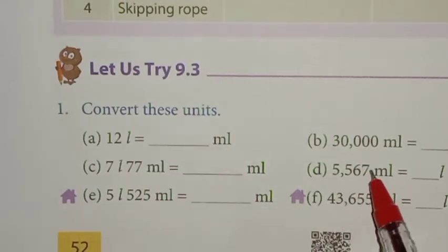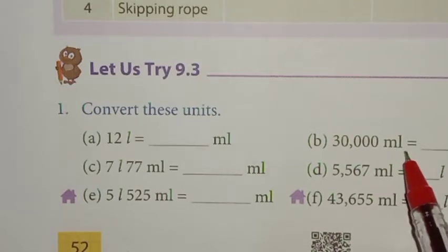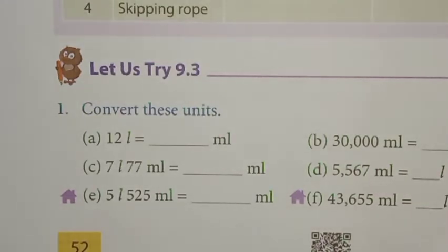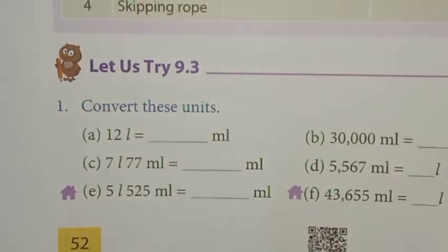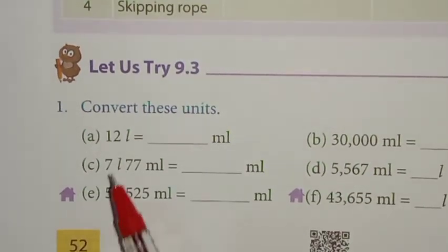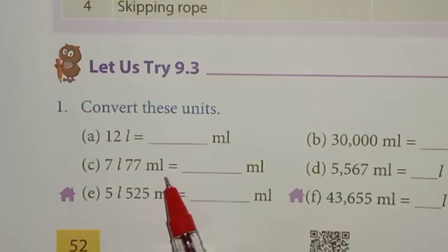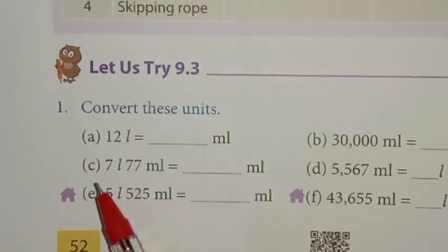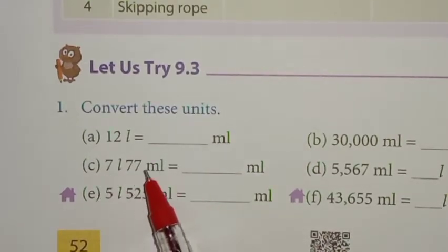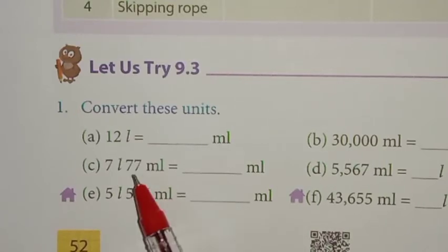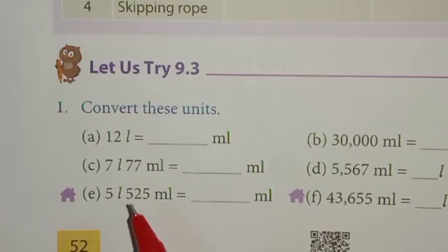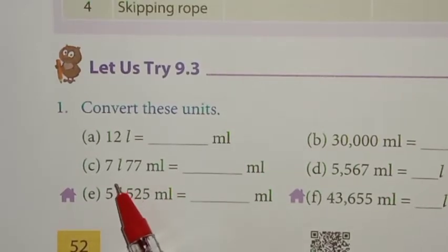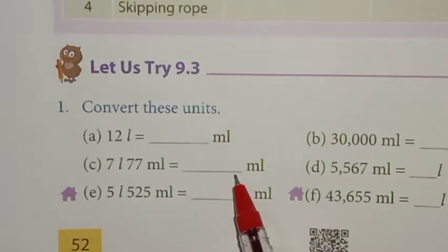Next: thirty thousand milliliter — to convert into liters, you divide by one thousand, so you can cut three zeros, giving thirty liters. Next: seven liters seventy-seven milliliter. Since one liter is one thousand milliliter, seven liters seventy-seven milliliter equals seven thousand and seventy-seven milliliter.